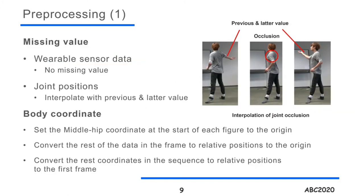Let me talk about preprocessing. There are missing values in joint position data due to self-occlusions. An example of right arm occlusion and interpolation is shown on the right top of the slide. We handle them with spline interpolation using values before and after the point.